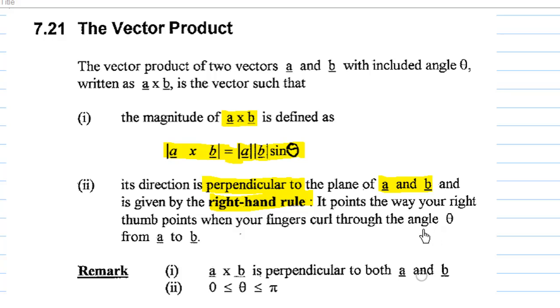So the vector product will be a vector. What are the key points? First, a cross b is perpendicular to both a and b. Second, we always take the angle between a and b to be between zero and pi, that means between zero and 180 degrees.